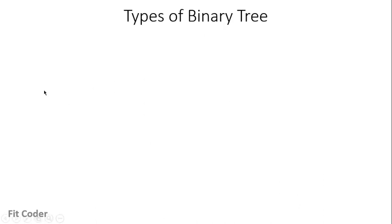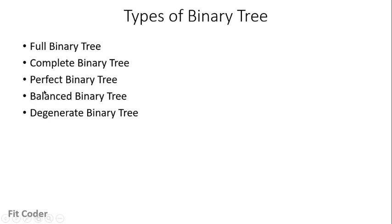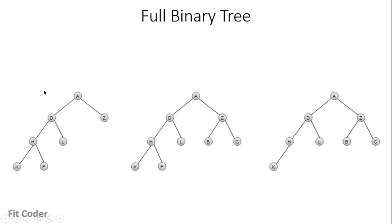Now let's see the different types of binary trees that we have. We have five types of binary trees. Let's discuss these one by one. First we have the full binary tree.